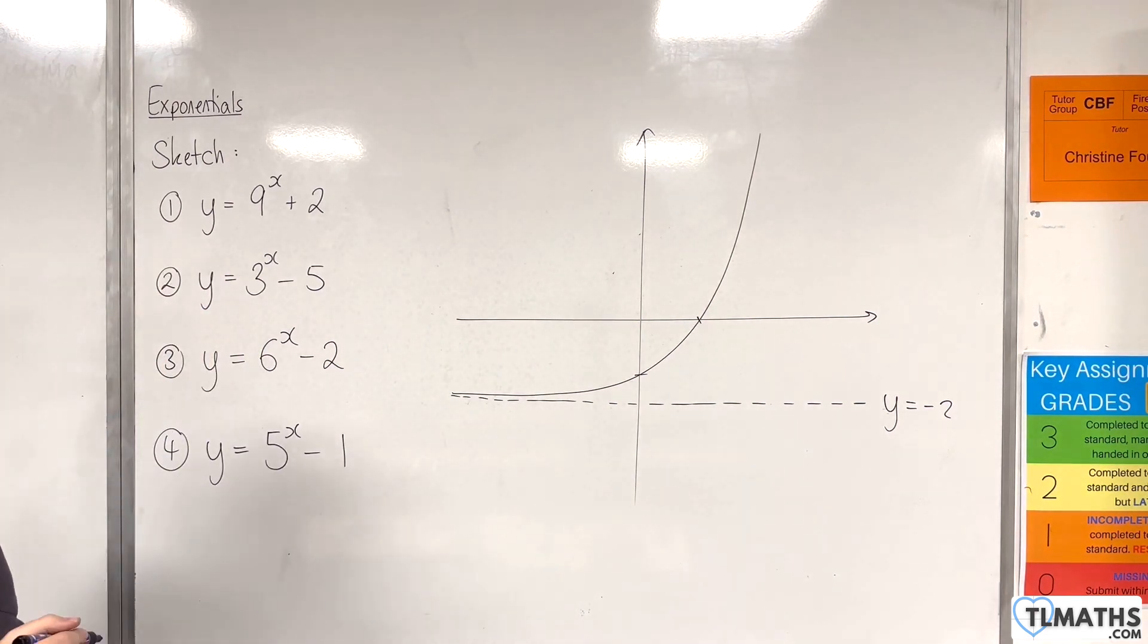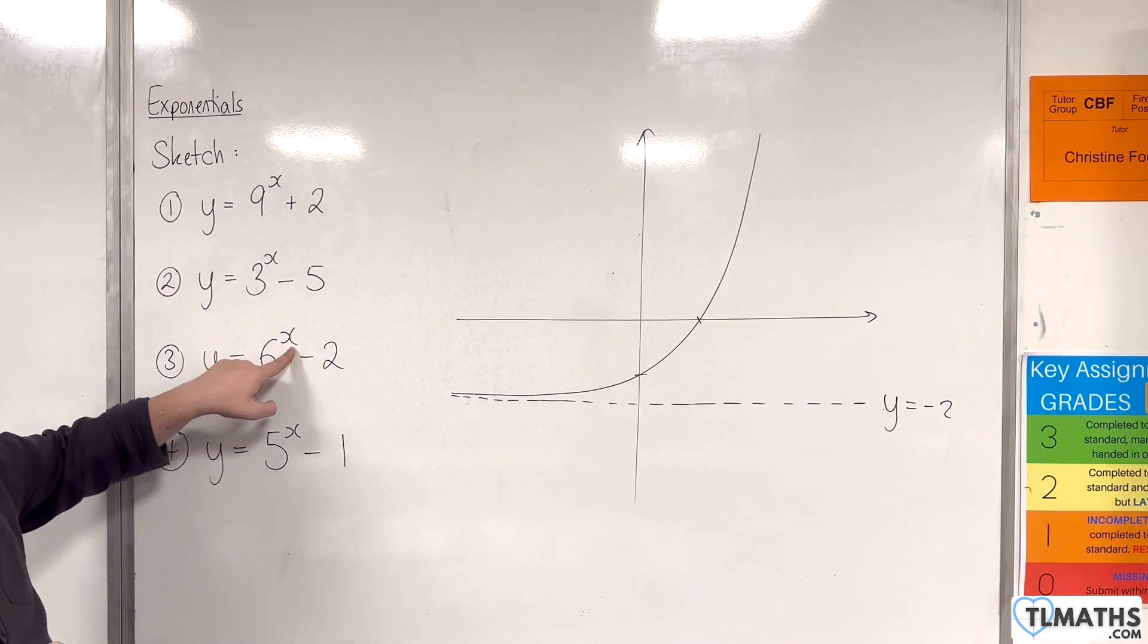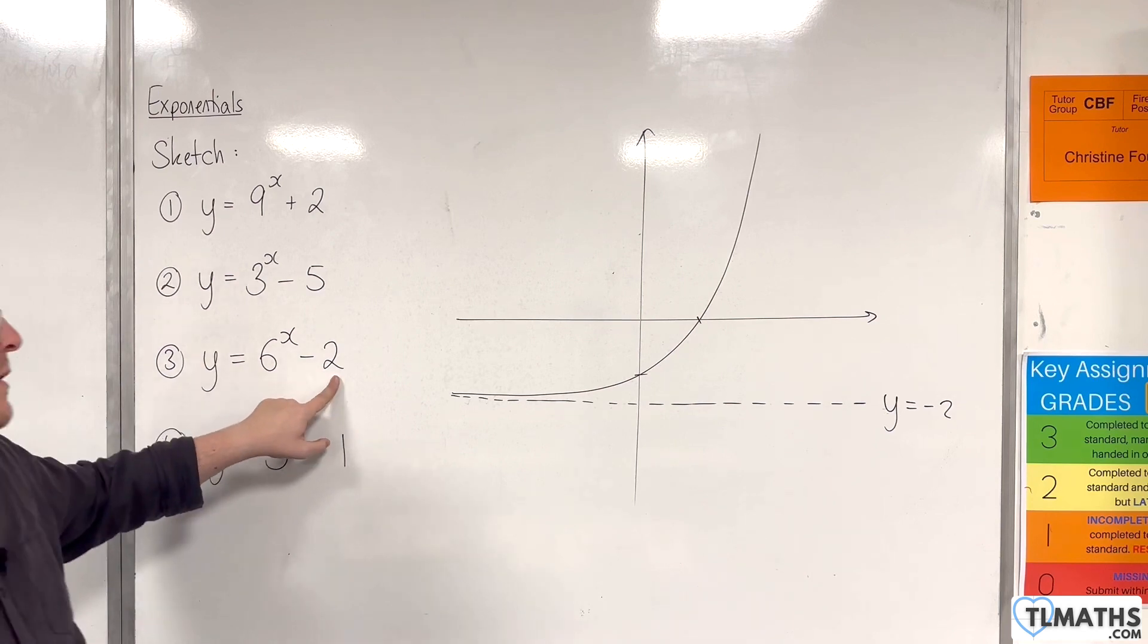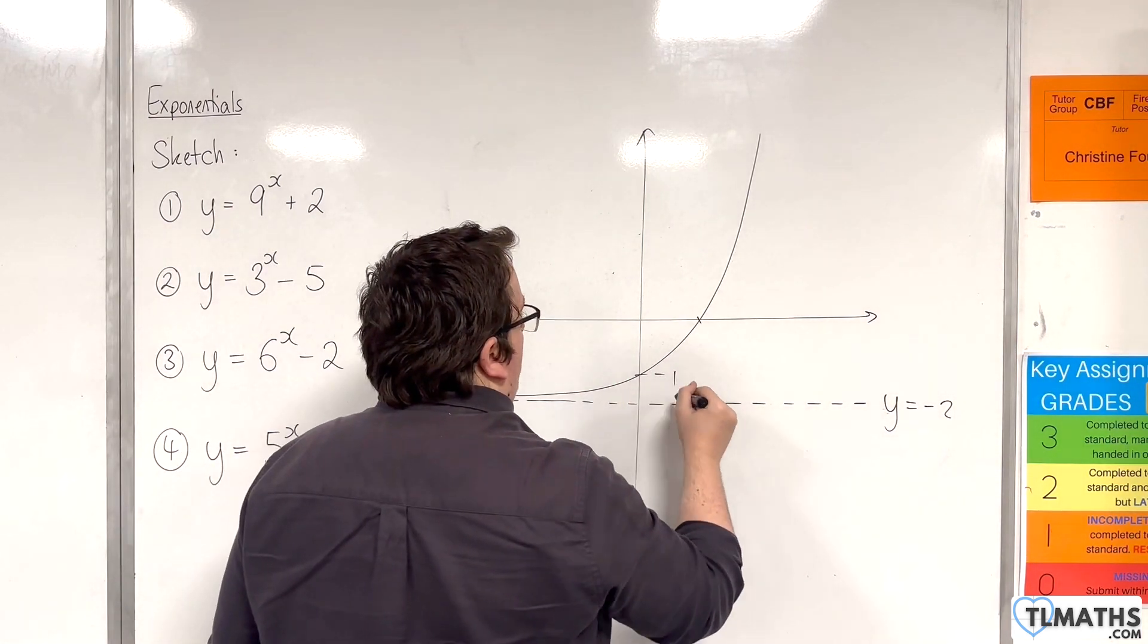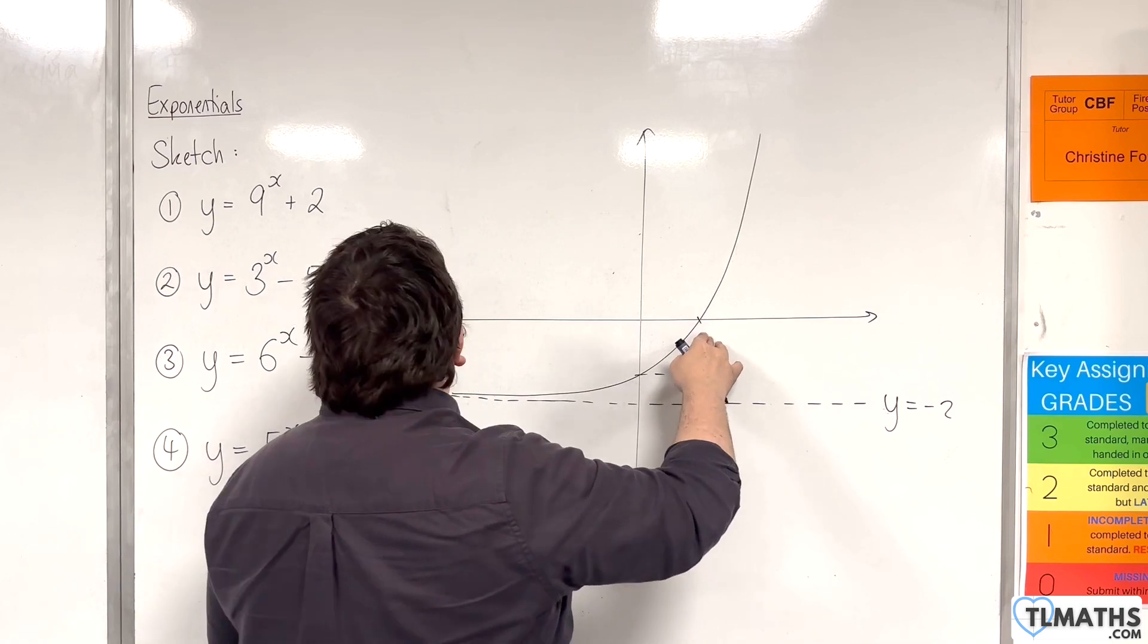And then we draw our curve. Two points of interest. So when x is 0 we're going to have 6 to the 0 take away 2, which is 1 take away 2, which is minus 1.